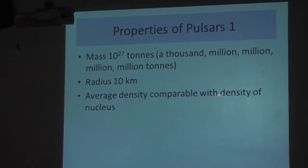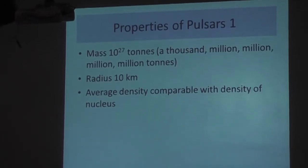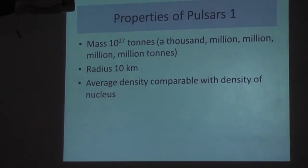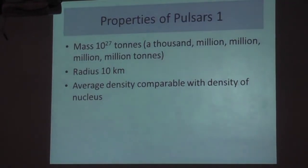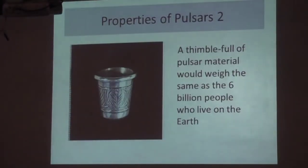Really, really small. Huge mass in a pretty tiny ball, as astronomical standards go — and so the density is very high. They're very compact objects. For physicists, the average density is like the density of the nucleus of an atom. I find that hard to visualise, so I've got an alternative way of looking at it.